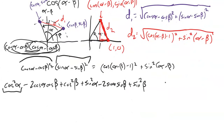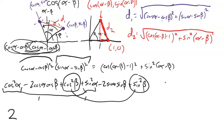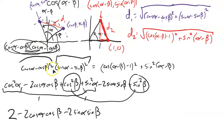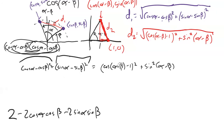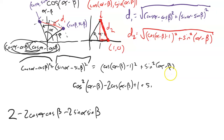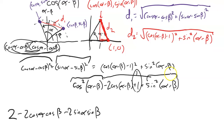Let me clean this up. Cosine squared of an angle plus sine squared of the same angle equals one — the Pythagorean identity. So those pairs each give a one, and one plus one is two. I'm left with two minus 2 cosine alpha cosine beta minus 2 sine alpha sine beta on the left side, and two minus 2 cosine(alpha − beta) on the right side.